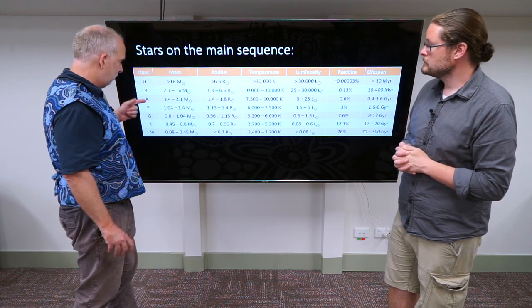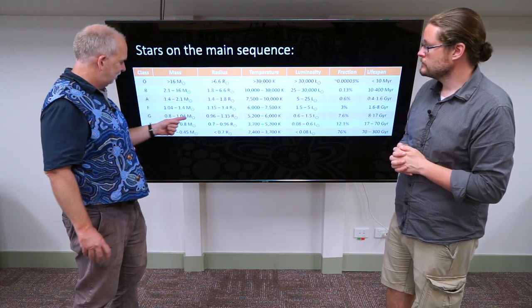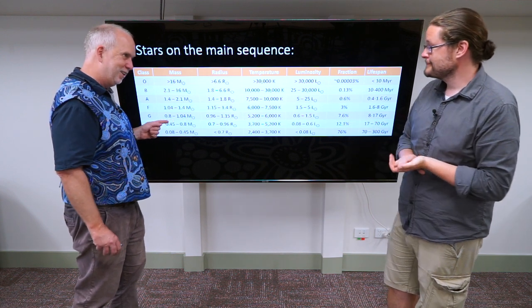As you go down in temperature, the masses drop, so G star obviously is about a solar mass, because the Sun is a G star.